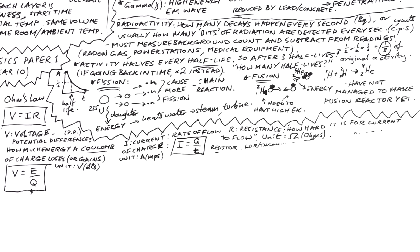I is the letter we give to current. That is the rate of flow of charge. Any rate is something divided by time. So you should be able to figure out what the equation is. Current I is equal to charge divided by time, coulombs per second. R is resistance. We can say it's how hard it is for current to flow through a component. The unit is ohms. We give it the symbol omega, which is your little horseshoe.